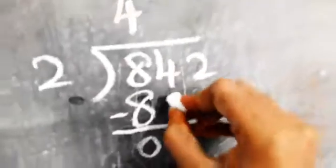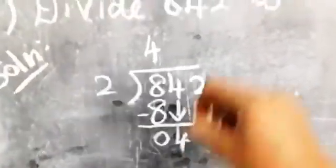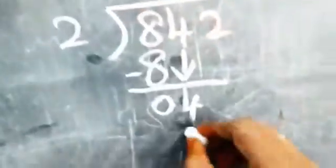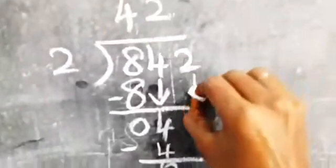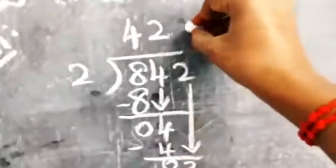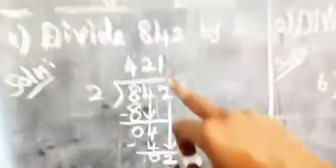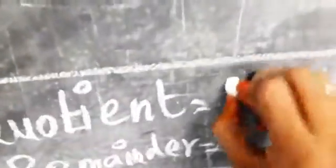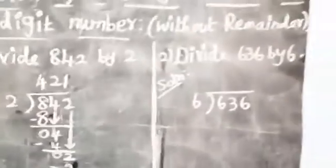Bring down the tens place: 4. How many twos are 4? Yes, 2 twos are 4, so write 2 in the quotient. 2 twos are 4, subtract: 4 minus 4 equals 0. Then bring down the ones place: 2. How many twos are 2? Yes, 1 two is 2, so write 1 in the quotient. 2 minus 2 is 0. Therefore, quotient is 421 and remainder is 0.